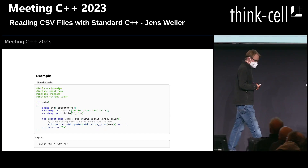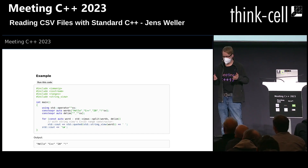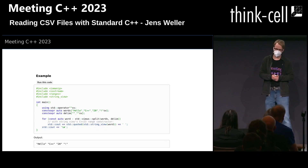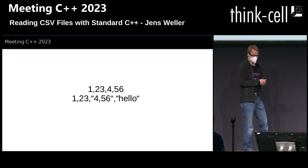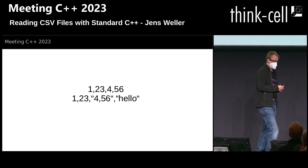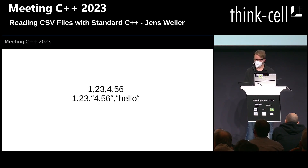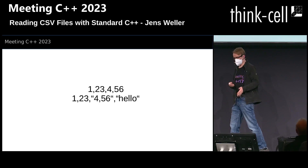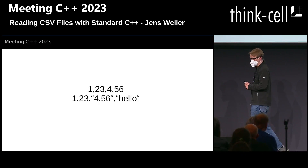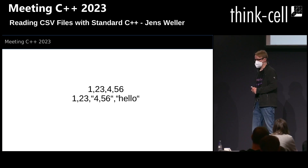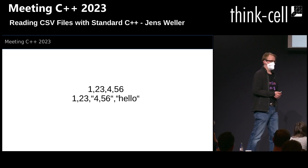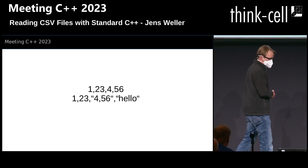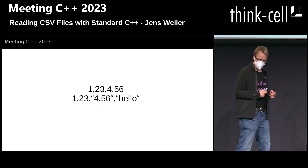If you look at the example, it doesn't work. There is just a little problem. In reality, CSV files don't look like simple comma-separated values — you actually have the option to have quotes. And with quotes, you can have the comma, or whatever separator, appear again inside a value. And split will happily split that. Split has its use cases in the standard, and it will split that for you, but then you'll have to glue the other pieces back together again.